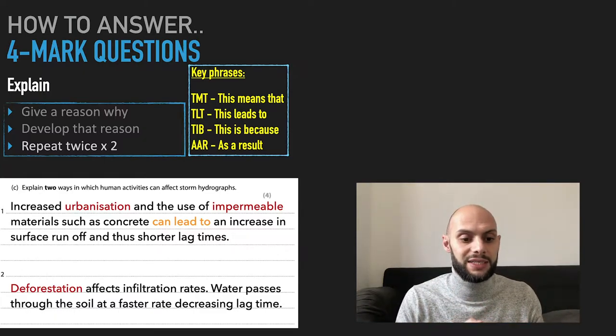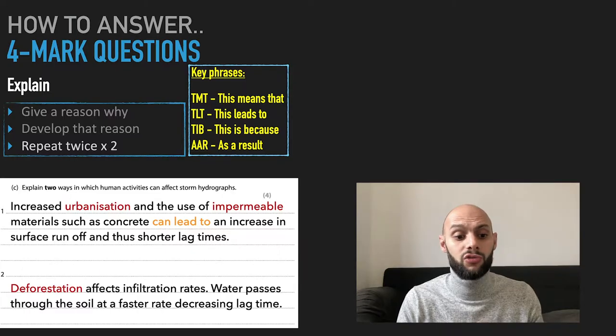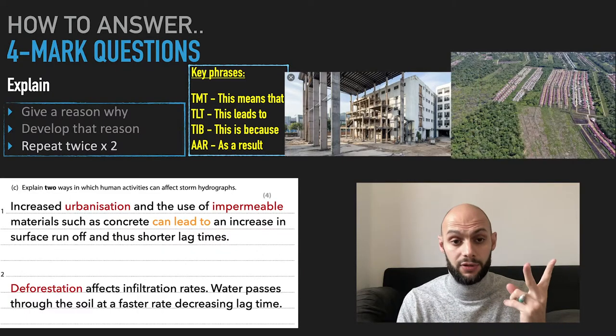So two ways human activities can affect storm hydrographs: urbanization, deforestation.